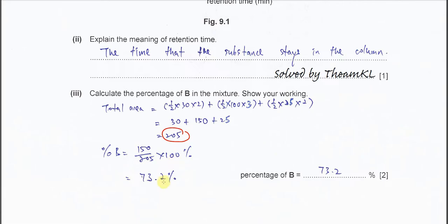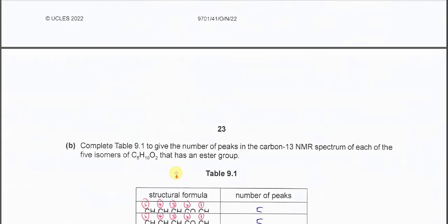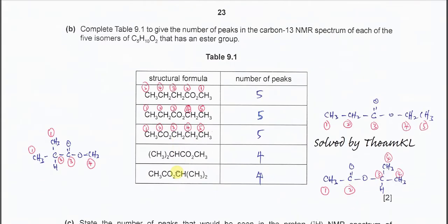Percentage of B = area of B divided by total area, times 100%, giving 73.2%. Part B: complete table 9.1 to give the numbers of peaks in the carbon-13 NMR for five isomers with molecular formula C5H10O2 that has an ester group.